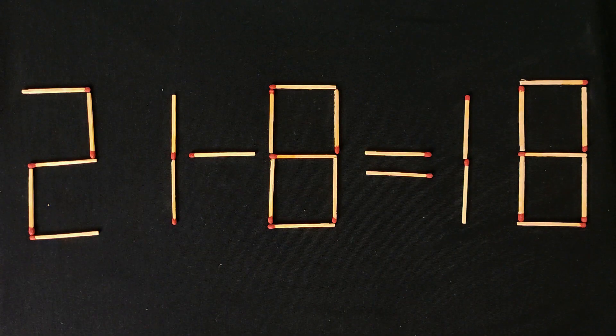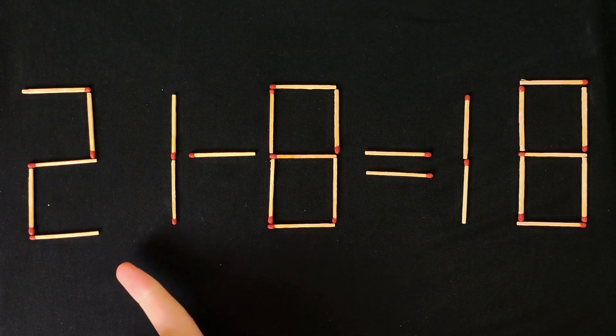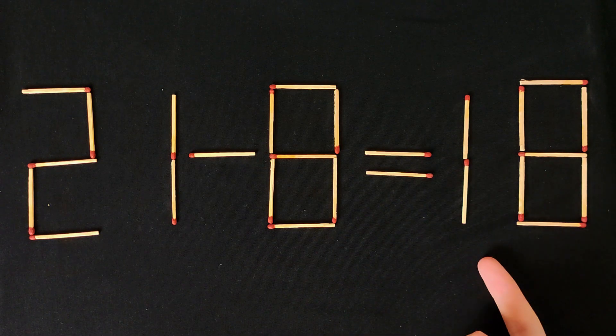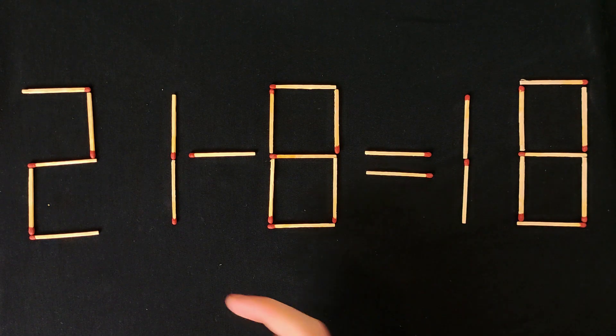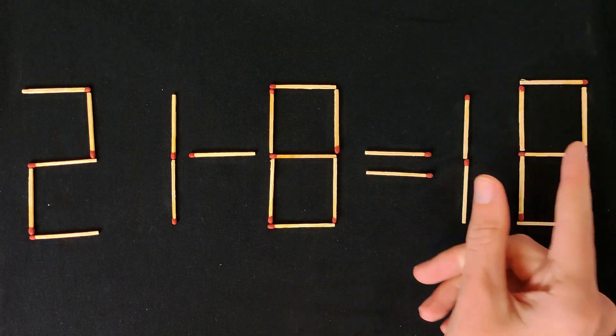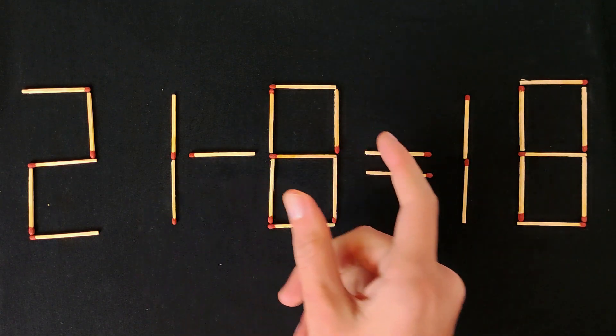Hi guys! Today we have a puzzle like this: 21 minus 8 equals 18. It's a wrong equation. We need to rearrange only one match so that this equation is correct.